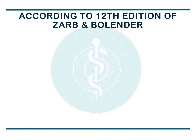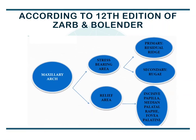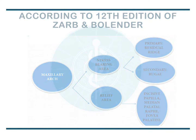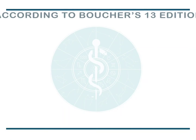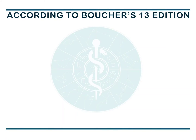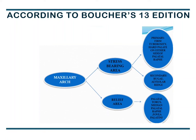According to the 12th edition of Zarb and Bolender, the primary support area for a maxillary arch is the residual ridge. But according to the 13th edition of Boucher, the primary support areas are the firm tuberosity and the hard palate on either side of the palatal raphae.